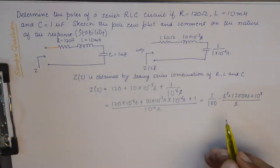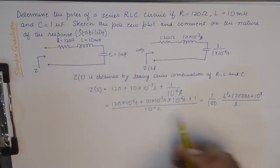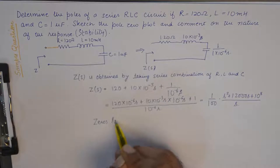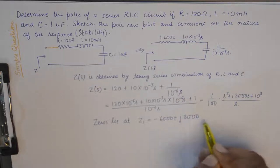Now from here we need to find out the zeros and the poles. So in order to find zeros, we need to find roots of the numerator. So zeros lie at a complex conjugate pair.